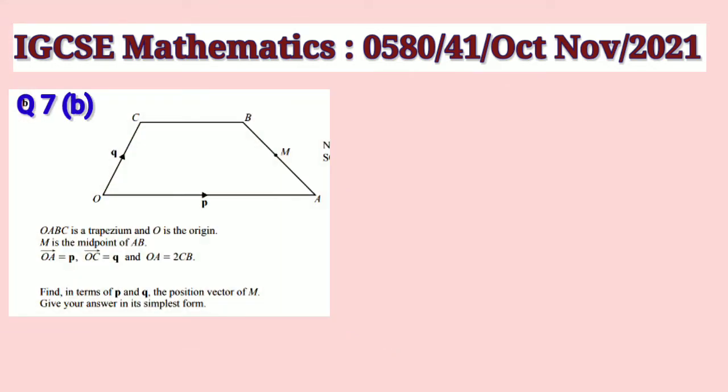Vector sum, OABC is a trapezium and O is origin, M is midpoint of AB, vector OA is equal to P, vector OC is Q, and OA is equal to 2CB. Find in terms of P and Q the position vector of M. Give your answer in simplest form.